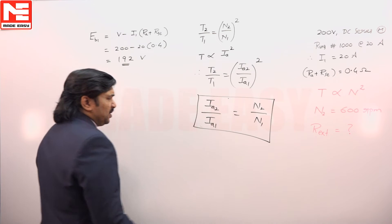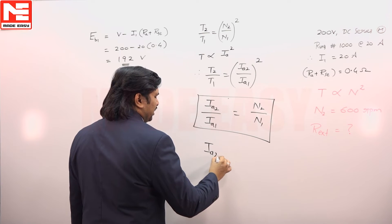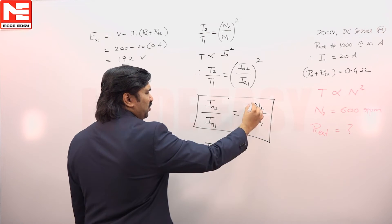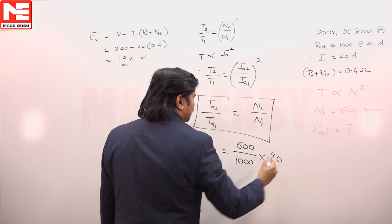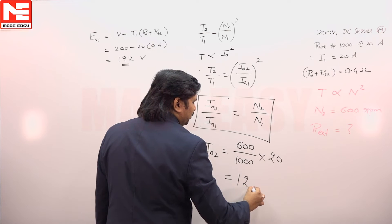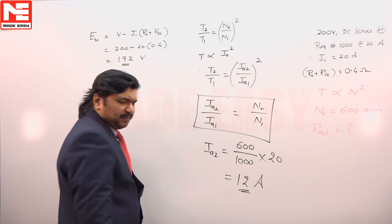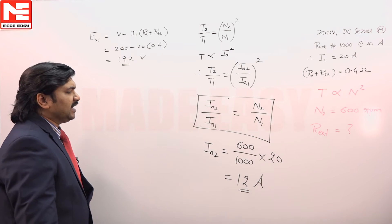Next, from this Ia2 is equal to, what is N2? 600. N1 is 1000. What is Ia1? 20. So if you calculate you are going to get 12 amperes as Ia2.